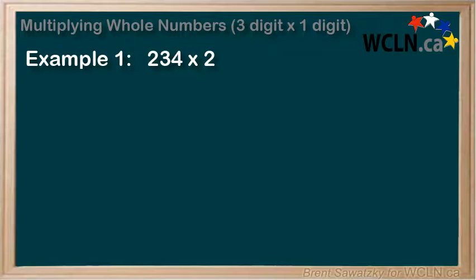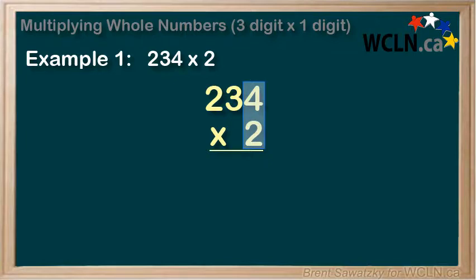Example 1: 234 times 2. Let's line it up like this. We'll multiply the 2 on the bottom by each of the digits in the upper number, starting on the right. 2 times 4 equals 8.